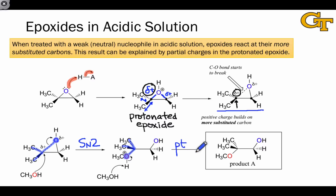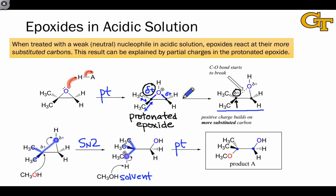Both of these features are hallmarks of the SN2 elementary step. A final proton transfer — usually to a molecule of the nucleophile, which here is also the solvent — gives the neutral product, which contains the nucleophile bound to the more substituted carbon and the hydroxyl group still connected to the less substituted carbon. Keep in mind the overall process: proton transfer in the first step generates the key protonated epoxide intermediate, the more substituted carbon bears greater partial charge, and the nucleophile attacks that more substituted position preferentially.